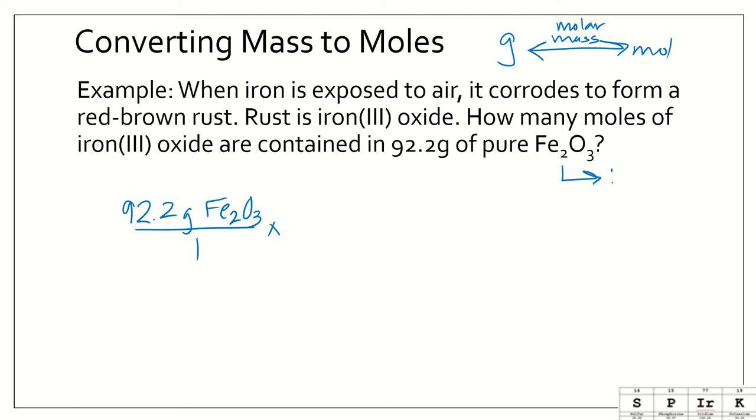When we add that up, we get a molar mass of 159.7 grams per mole. Gram cancels with gram. We multiply across, divide by the bottom. When we do that, we get 0.577 mole Fe2O3. We're going to use this conversion quite often.